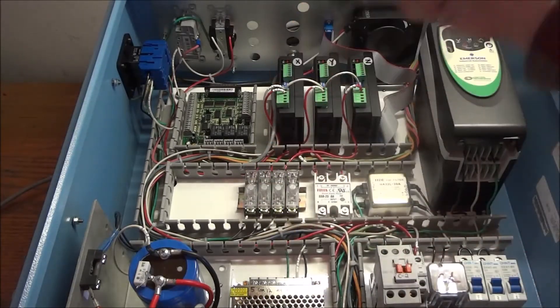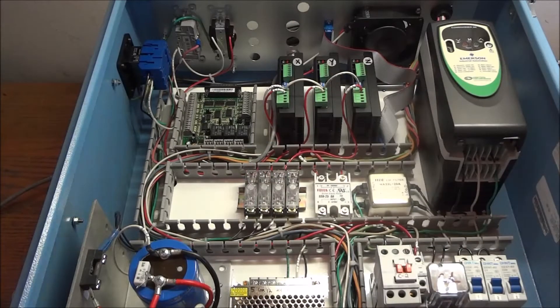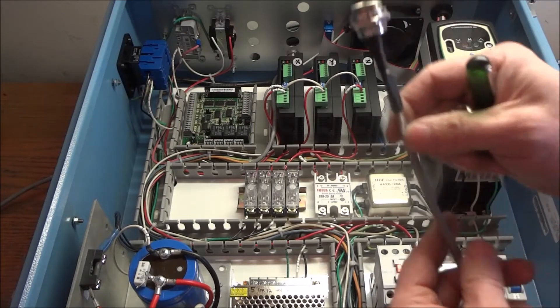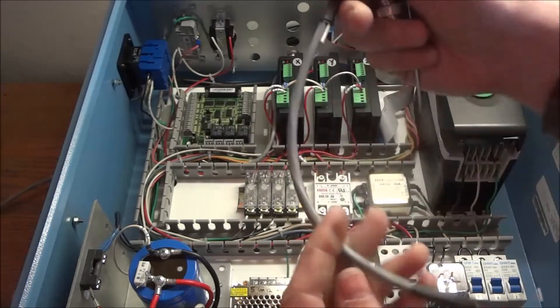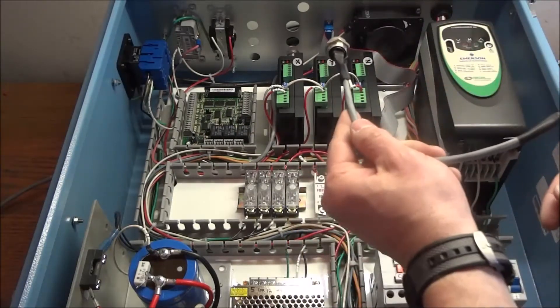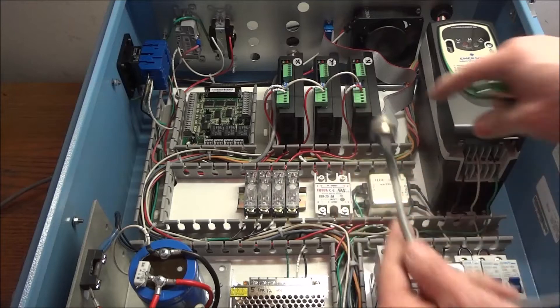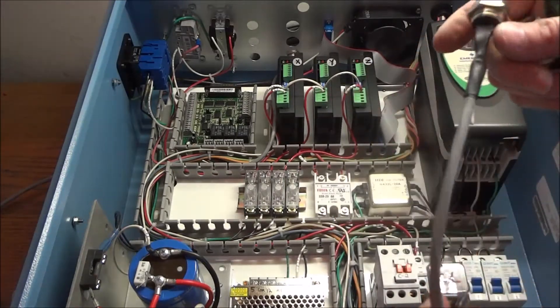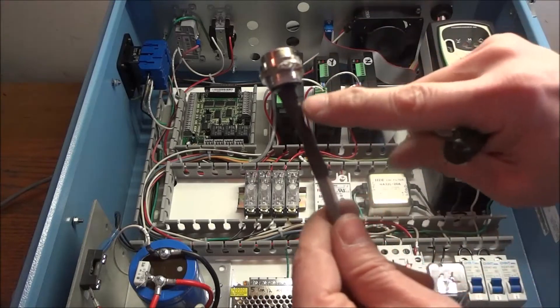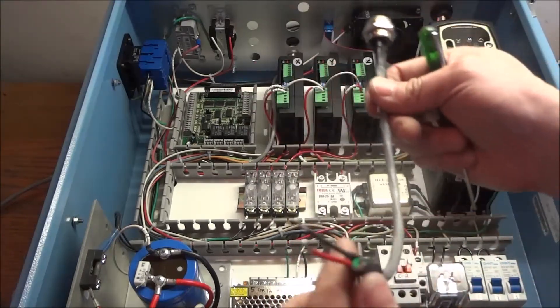Now these three wires are going to go out to our aviation plugs and then from our aviation plugs they're going to go out to the motor. So what I did was I've made me three pigtails here then I'm going to screw into the back of the panel and then we're going to wire up to each one of our stepper drivers.